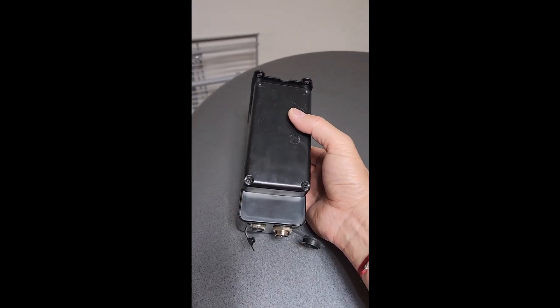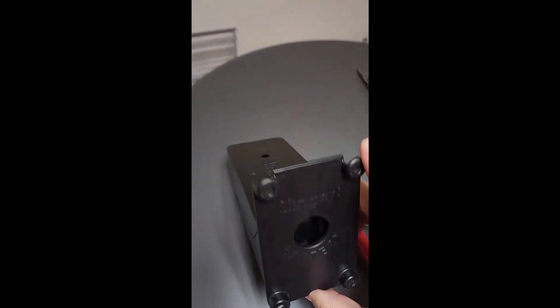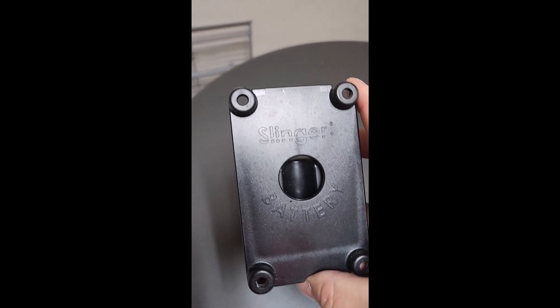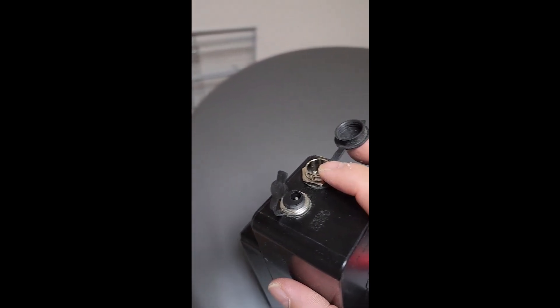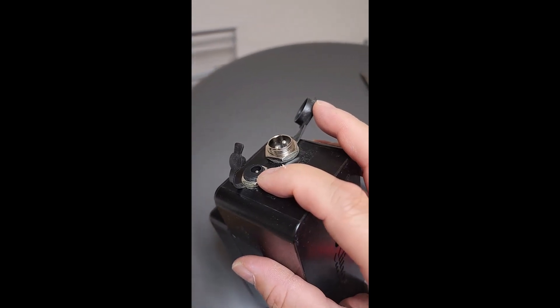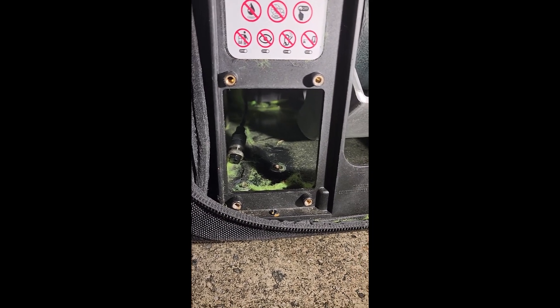So now everything is put back. Battery is in the case. So we are ready to plug this thing back into the machine. Just need to connect this side to the launcher. And this one is for the charger. So now we're ready to put the battery pack back into the machine.